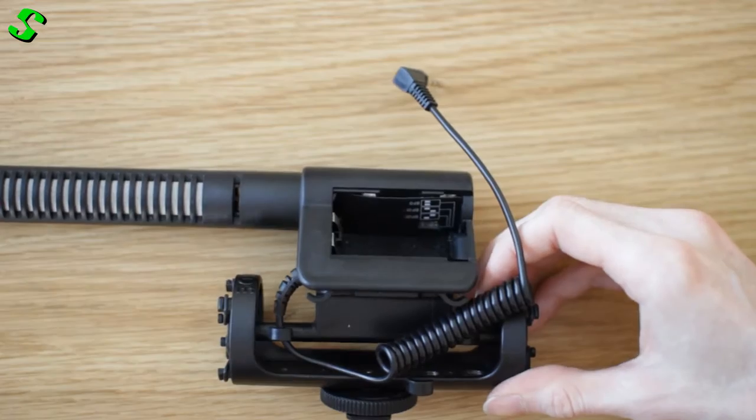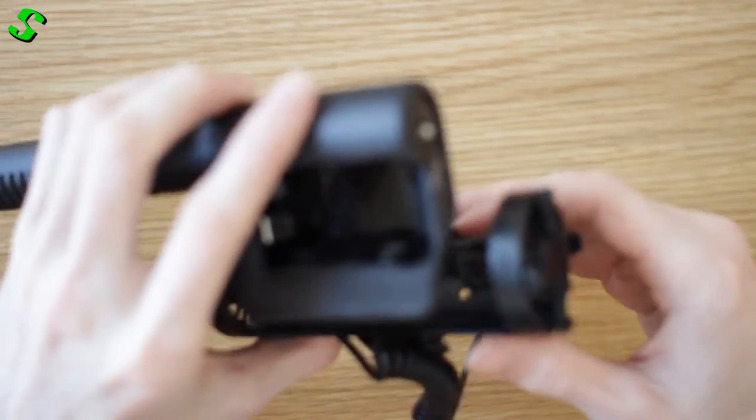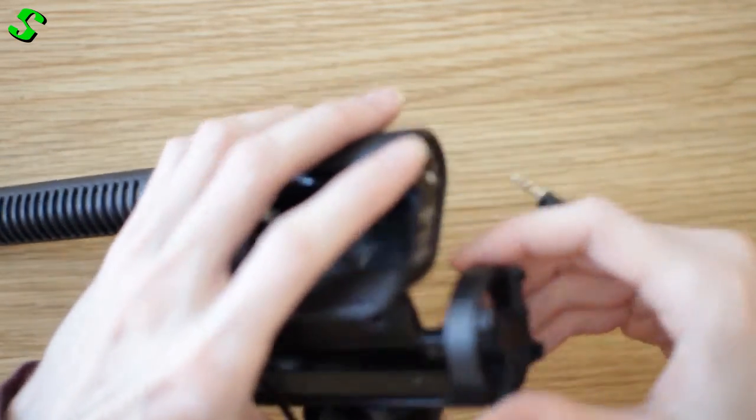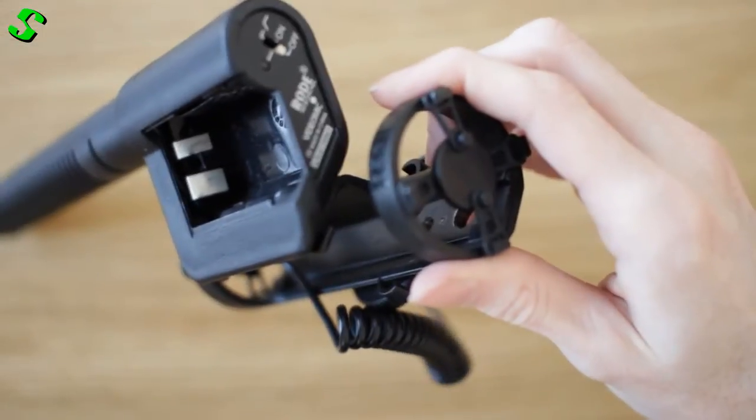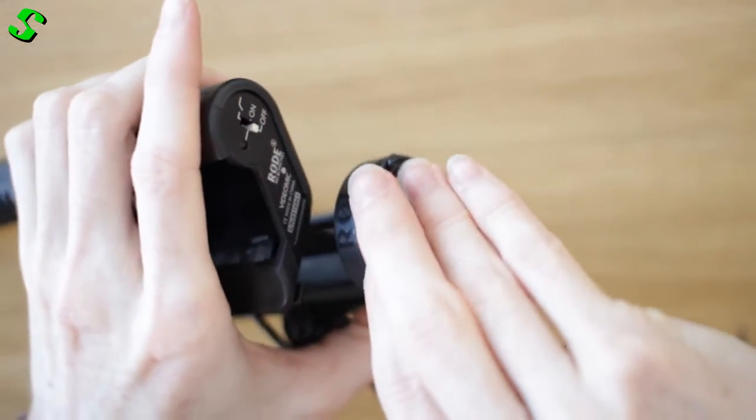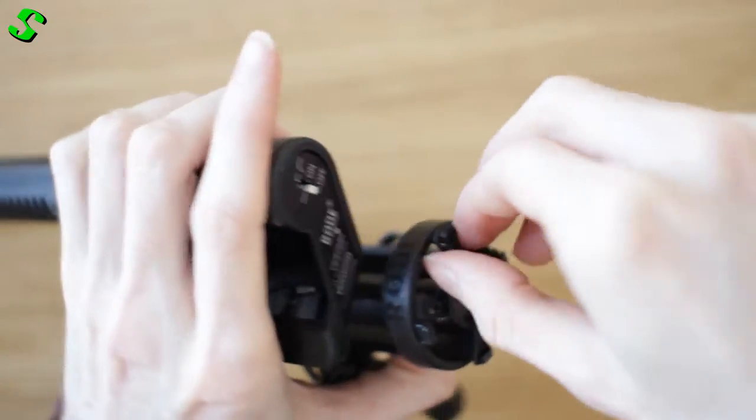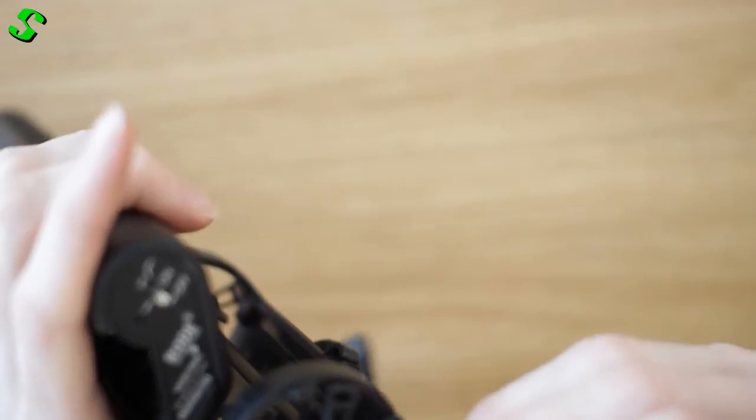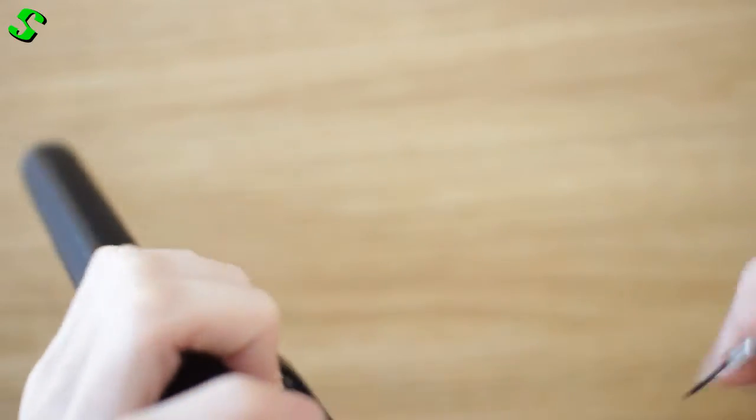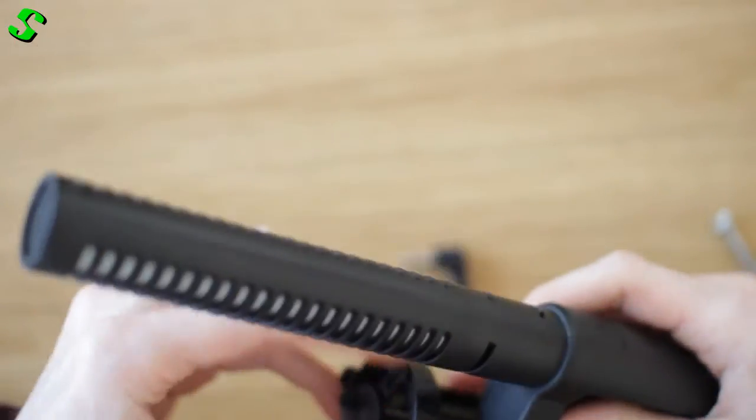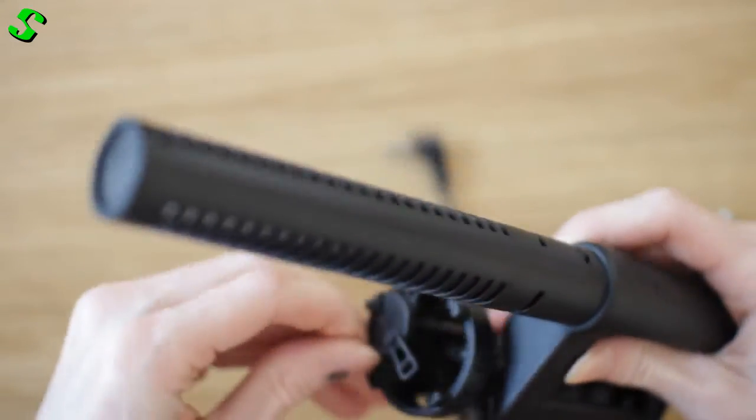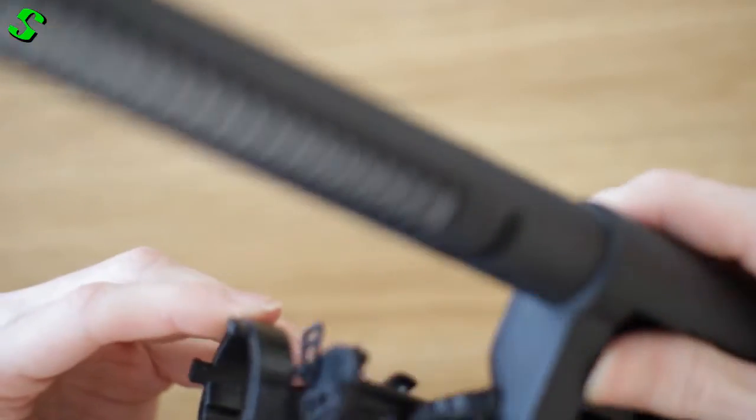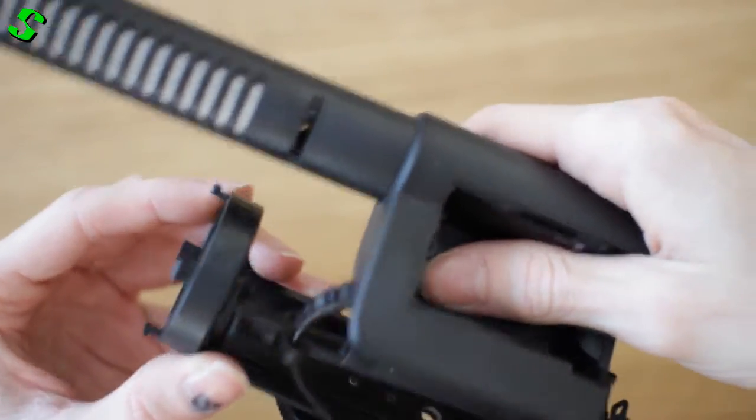And also we want to remove the Rode VideoMic from the actual shock mount. You want to be careful with these rubber mounts—you don't want to break them, even though you do come with spares. You want to just unhook them off these little hooks, and if you haven't got nails you can use a tool like a really small screwdriver to help you do it easier.